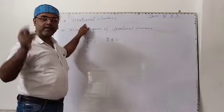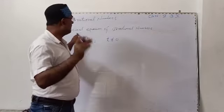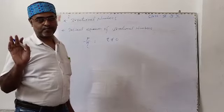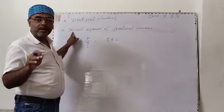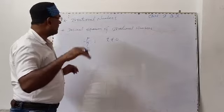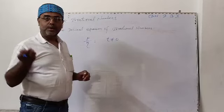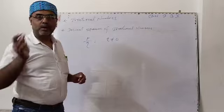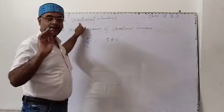We can also define an irrational number with respect to its decimal expansion. The number whose decimal expansion is non-terminating non-repeating is called an irrational number.